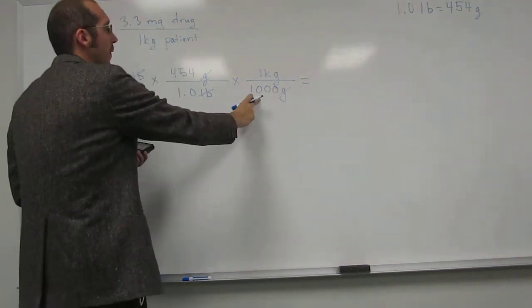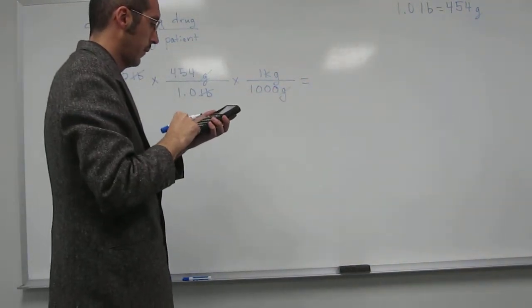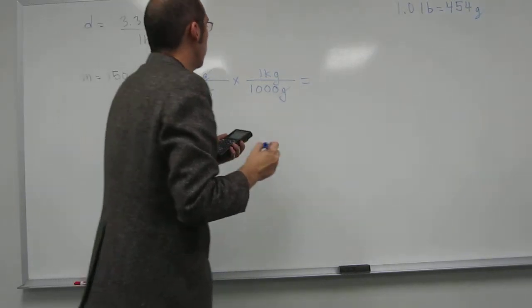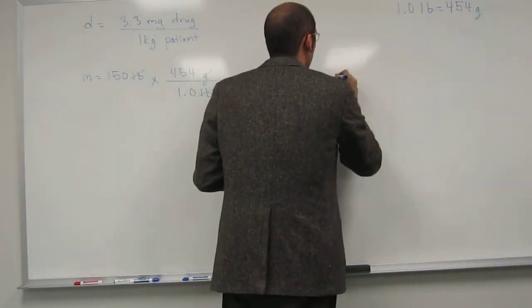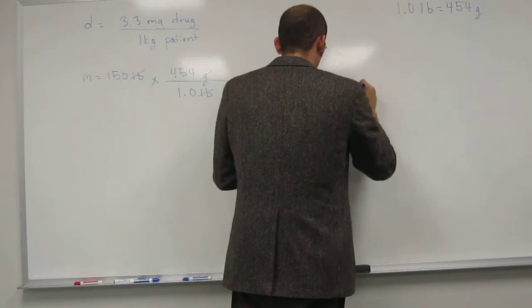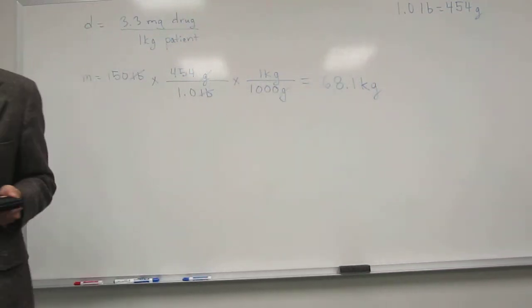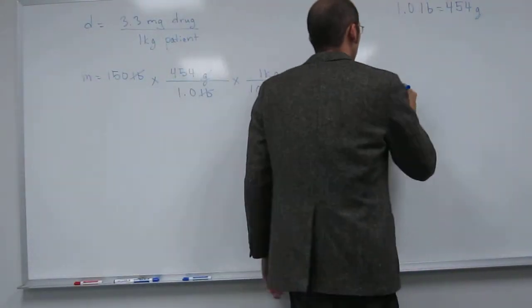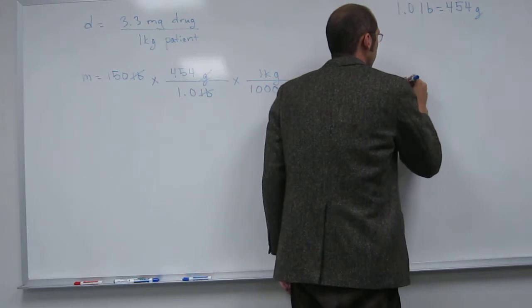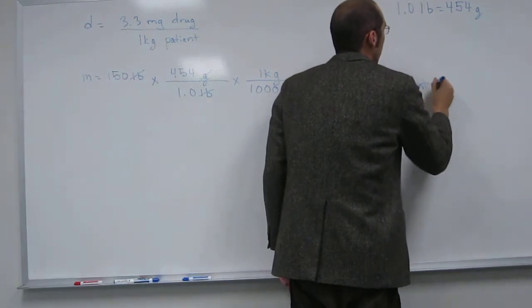So, 150 times 454 times 1 equals 68,100 kilograms. And then you're going to divide that by 1,000. When you do that, you get 68.1 kilograms. So, that's how much your patient weighs in kilograms. So, you could say 68.1 kilograms of patient, because that's your real units.